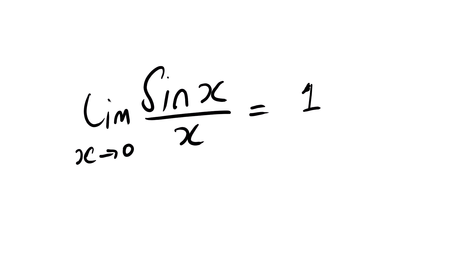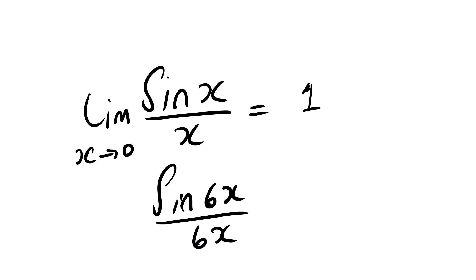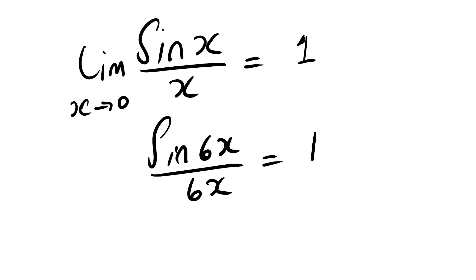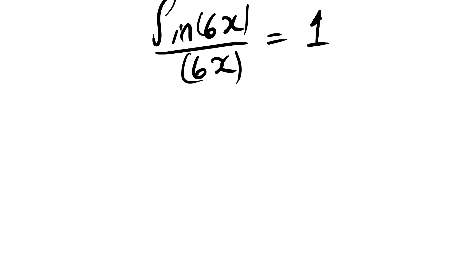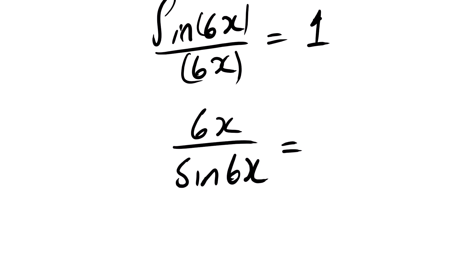This identity is simple. For example, if we have sin 6x over 6x, this will also be equal to 1. So whatever angle you have, as long as the argument of sine matches the denominator, the limit equals 1. This is our identity. The same applies to 6x divided by sin 6x — the limit of this, as x approaches 0, will always be 1.